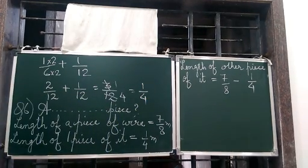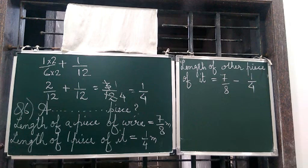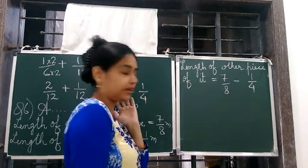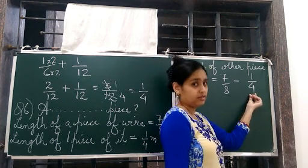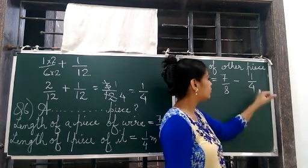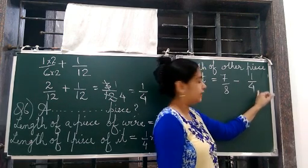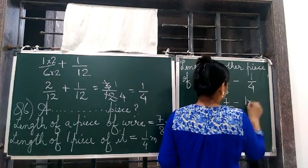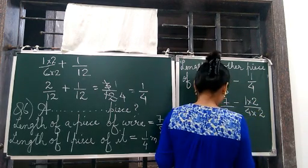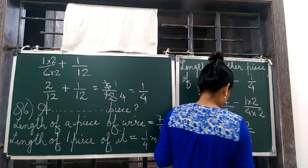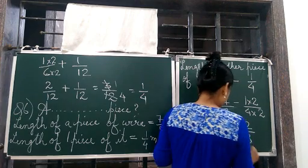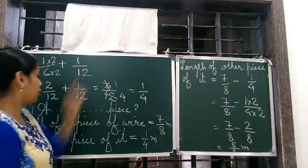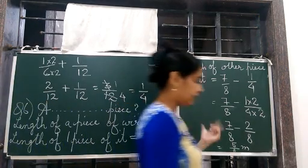Again these are fractions. Before subtracting we check whether the denominators are same or not. The denominators are not same, so we have to make them same. We see that 8 and 4 have common factors — so we use the common factor method. 4 twos are 8, so we multiply 2 here. So the answer is 5 by 8. The length of the other piece of the wire will be 5 by 8 meters.